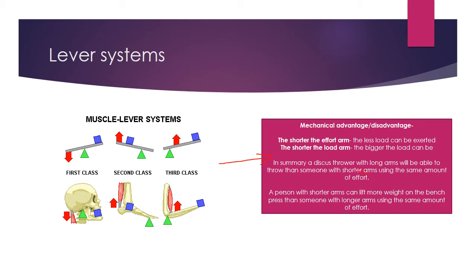However, we've got to note that that is only if they were to use the same amount of effort. Equally, a person with shorter arms could lift more weight on the bench press than someone with longer arms using the same amount of effort. The reason being is because they have a shorter load arm and therefore the load can be much larger.